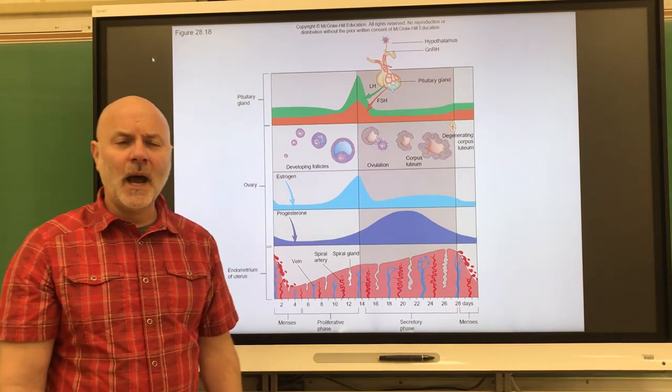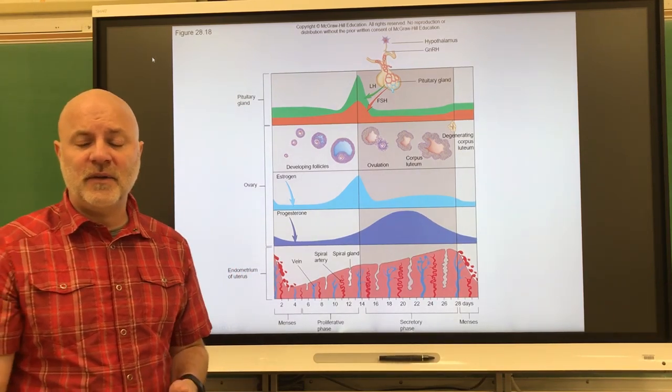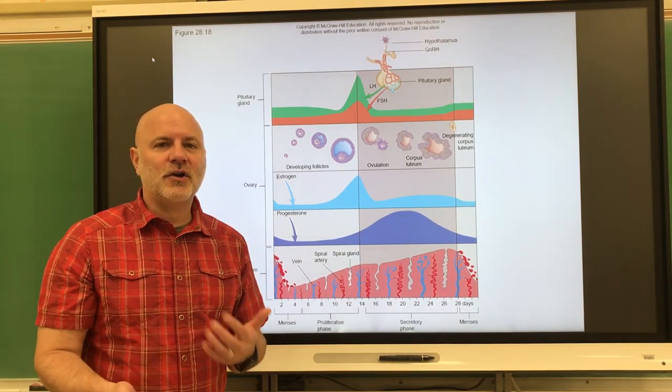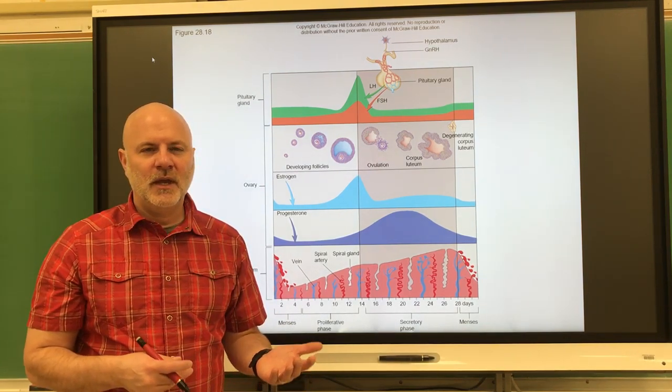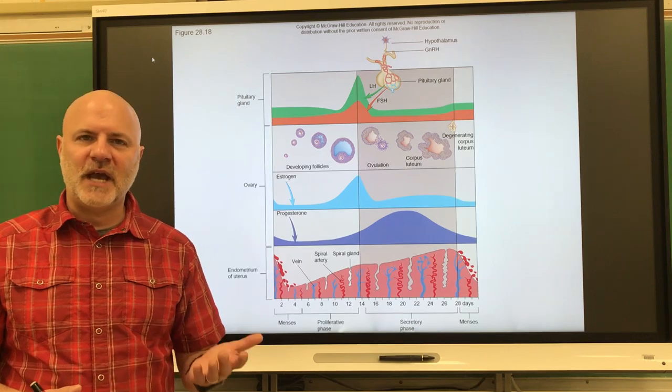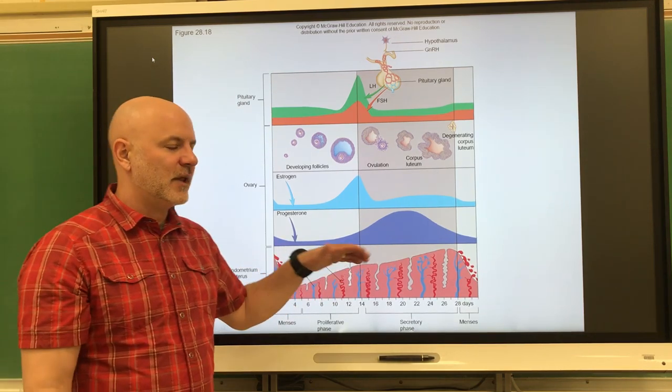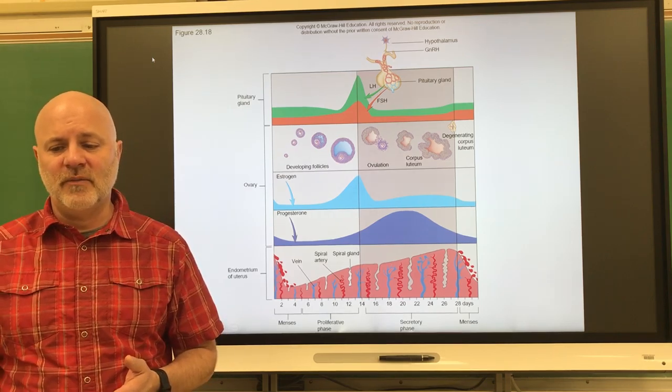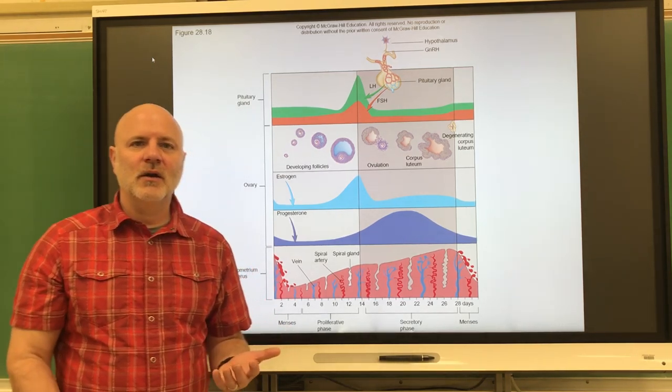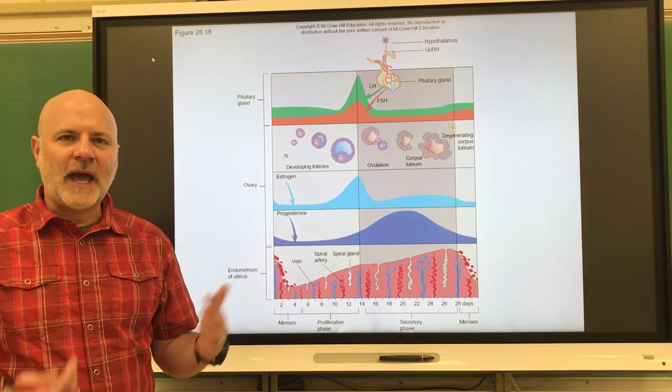Menarche, that's a female's first menstrual cycle, occurs when the ovaries mature and respond to follicle stimulating hormone. The granulosa cells produce estrogen and progesterone, which causes the buildup in the endometrium. Menopause is a termination of the menstrual cycle.